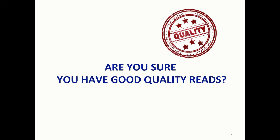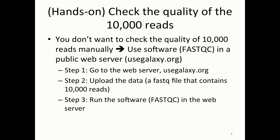One of the first questions when you start to analyze the data is: are you sure you have good quality reads? I'd like to do a hands-on together to get you introduced to NGS data processing, especially the quality control. You don't want to check the quality of reads manually — when you run sequencers, you often get 150 million or 200 million reads. For this exercise I'm using a very small dataset of only 10,000 reads, but still 10,000 reads are a lot to check manually. So we want to use the software called FastQC in the public web server available through usegalaxy.org.